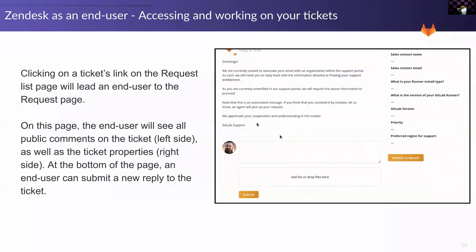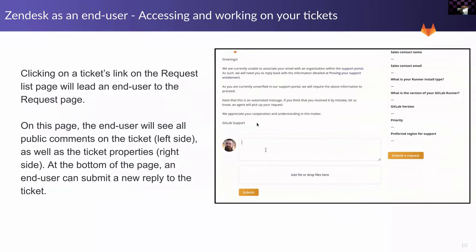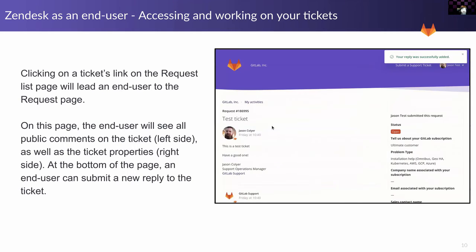By clicking on a link there, you'll be at the ticket page. You can see ticket information, post new comments, and attach new files. The area where you add a comment is towards the bottom of the ticket, and that's also where the orange Submit button will be. The Submit a Request option on the right side is for creating a new ticket.